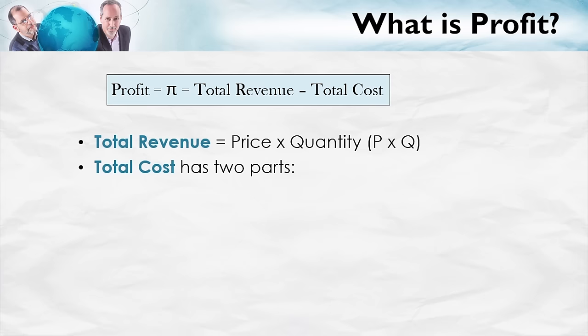Total cost has two parts. First are the fixed costs — these are costs that do not vary with output. For example, suppose you are the owner of a small oil well and you have to pay rent for the land on which the oil well sits. Those rental costs you have to pay regardless of how much the oil well is producing — whether you're producing one, ten, or eleven barrels of oil per month. Even if you don't produce any oil that month, you still have to pay those rental costs. So rental costs are fixed costs that don't vary with the quantity produced.